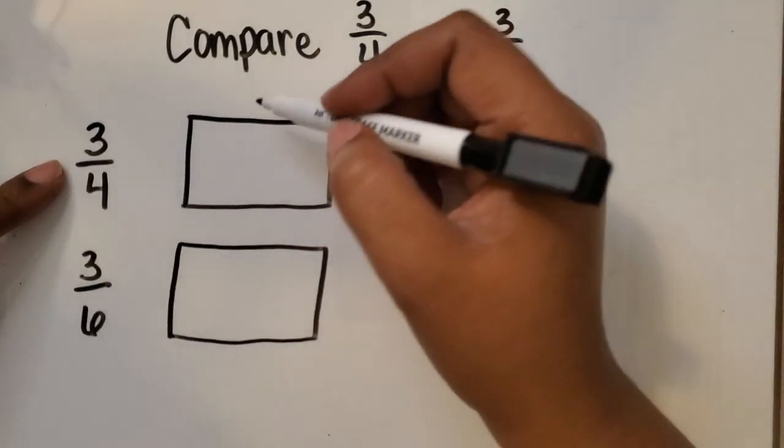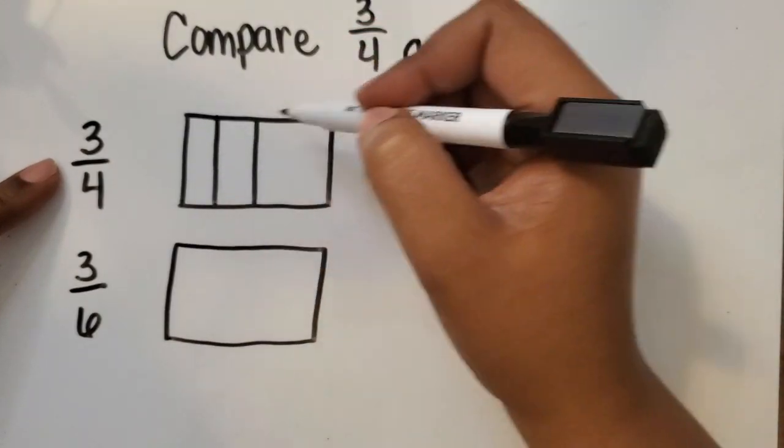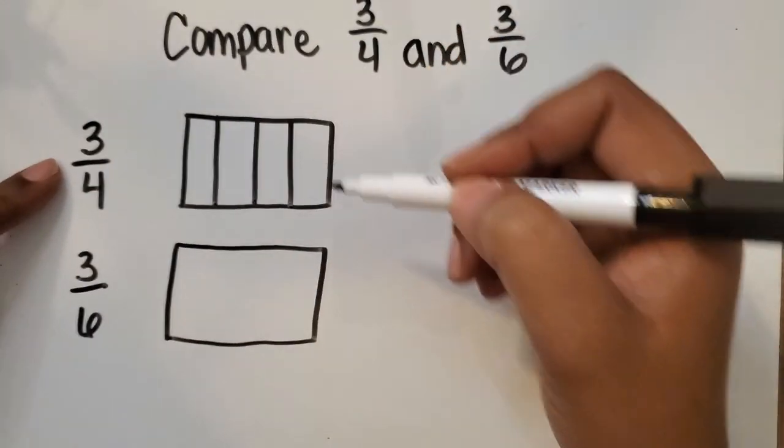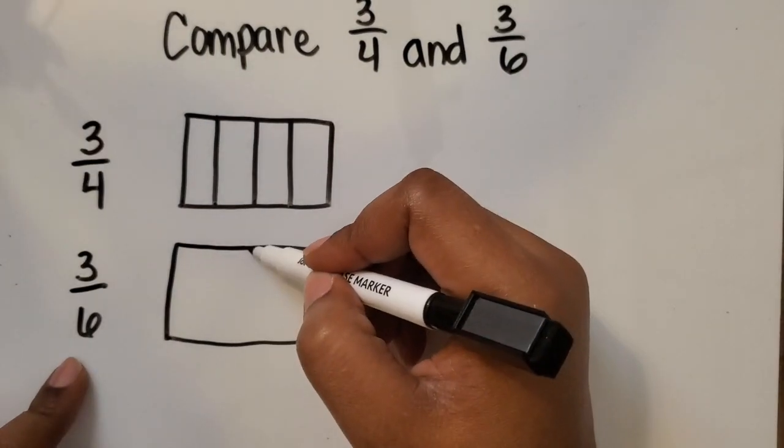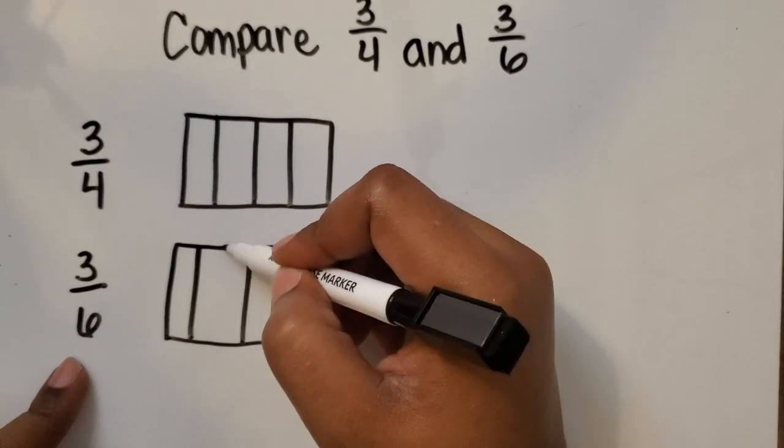The first fraction is 3 fourths so I'm going to partition the whole into four equal parts. The second whole has six so I'm going to partition the second whole into six equal parts.